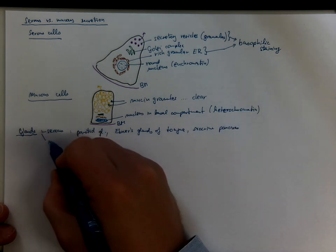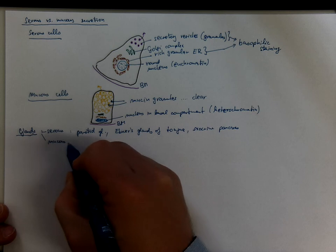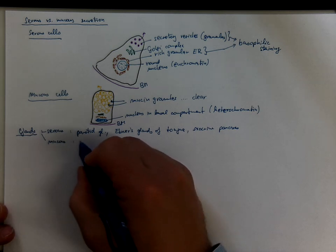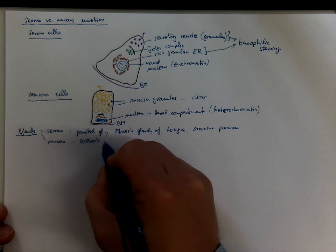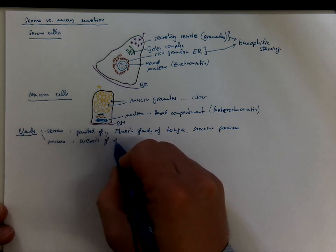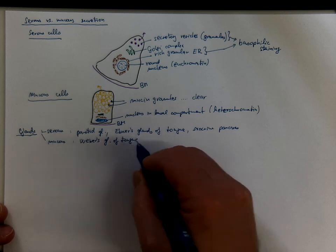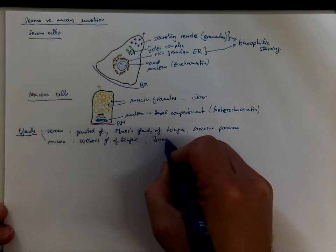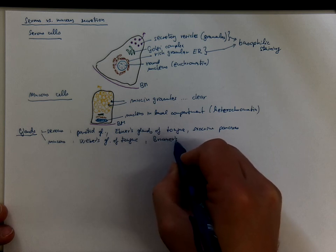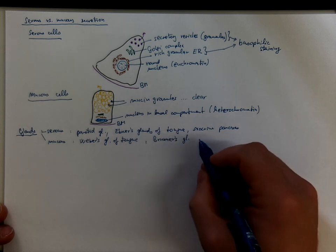There are also mucous glands in the human body, such as the Weber's glands of the tongue or the radix of the tongue, or Brunner's glands in the submucosa of the duodenum.